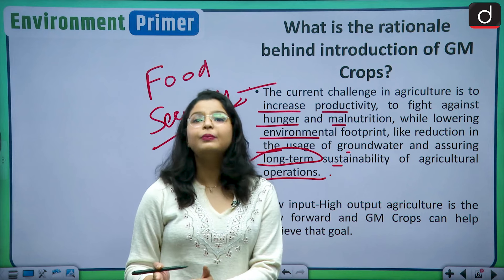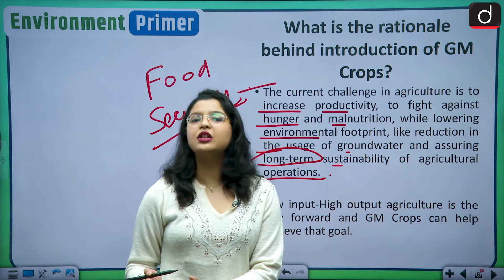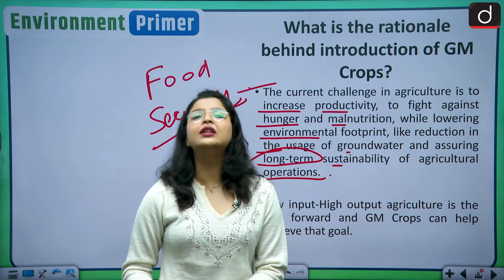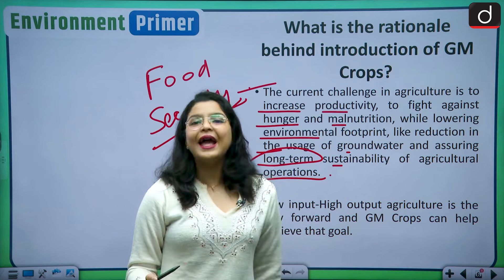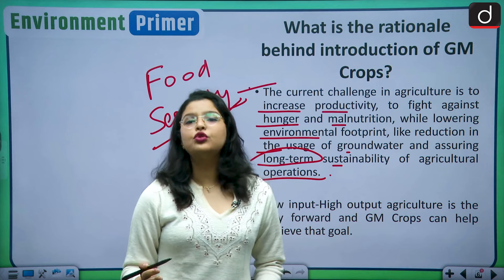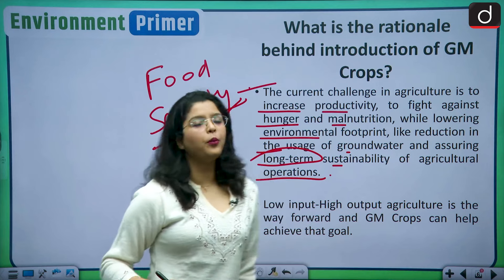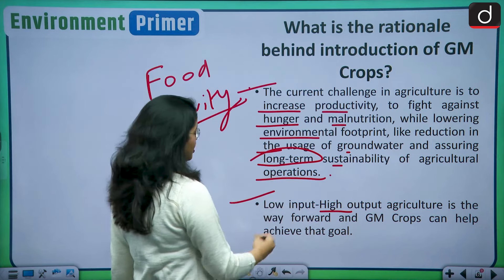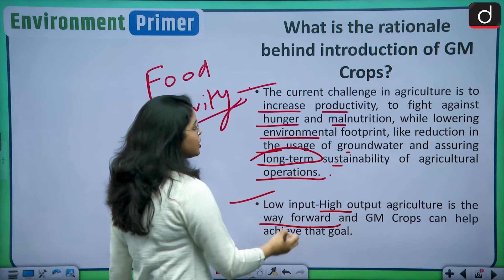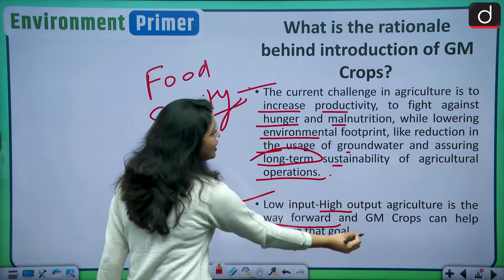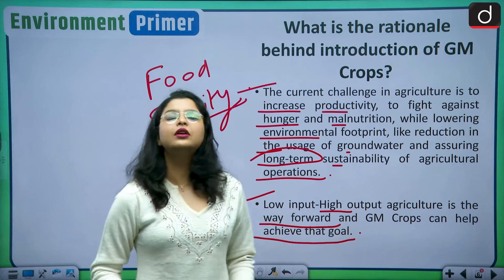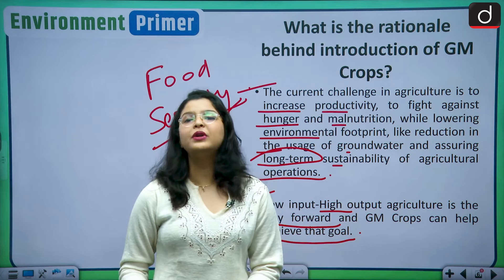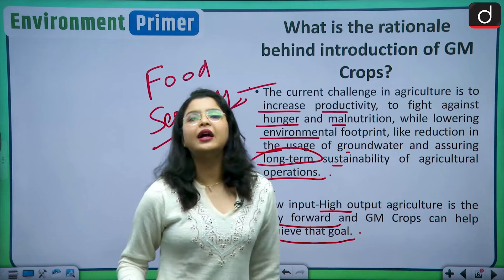GM crops help in maintaining sustainable agricultural produce and provide food security by delivering more agricultural output to feed the growing population. Low input and high output agriculture is the way forward, and GM crops can actually help in achieving that goal. They are very important for countries around the globe, especially developing countries.